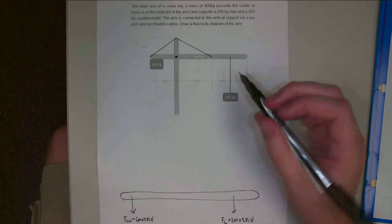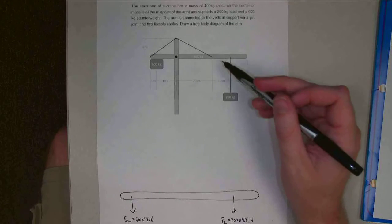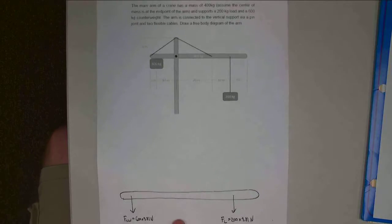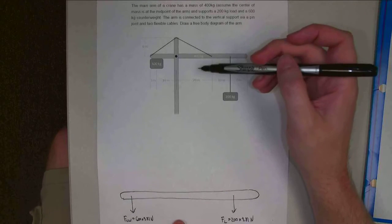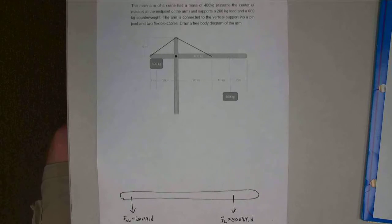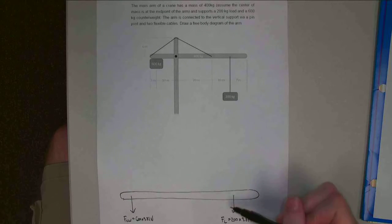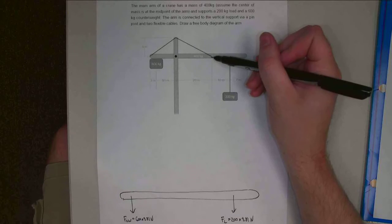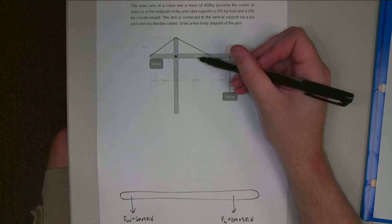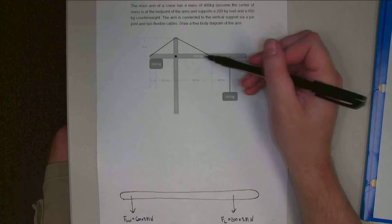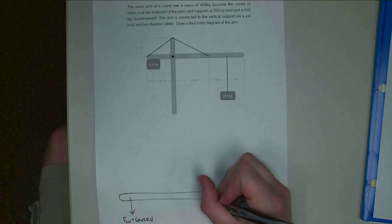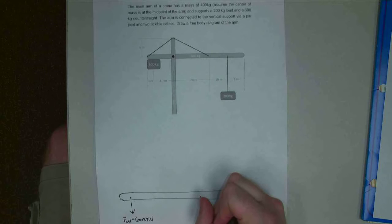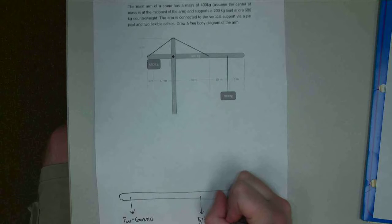I also have the weight force, so it's a 400 kilogram arm. So I'm going to add the weight force. And if I figure out the midpoint, that's going to be 10 meters back from this cable. And another 8 meters back would bring me to 25 meters from either side of this 50 meter long piece. So my gravity force, Fg, is 400 times 9.81.